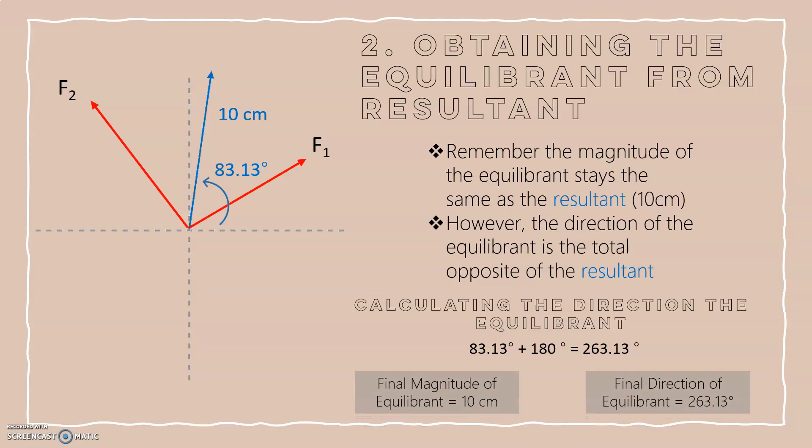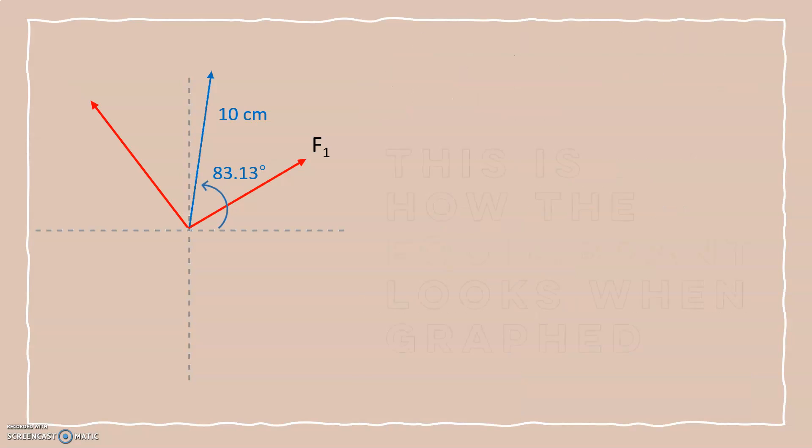And finally, we have our final magnitude of our equilibrium: 10 centimeters, and our final direction of the equilibrium: 263.13 degrees. Let's graph this.